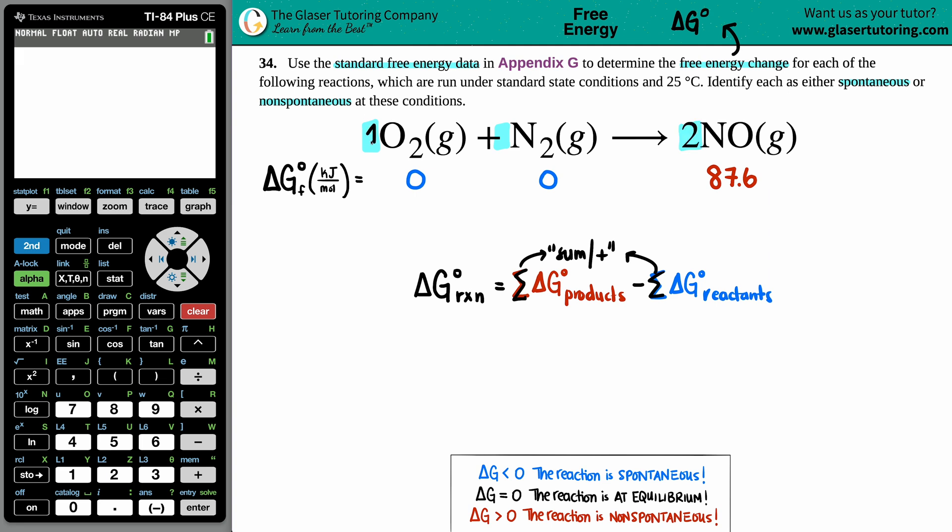I had one O2, one N2, and two NOs. Those numbers is what you're going to be multiplying your delta G values by. So since you have one O2, you'll take one and times it by zero. One N2, so one times zero. Two NOs, so I take the 87.6 and times it by two.